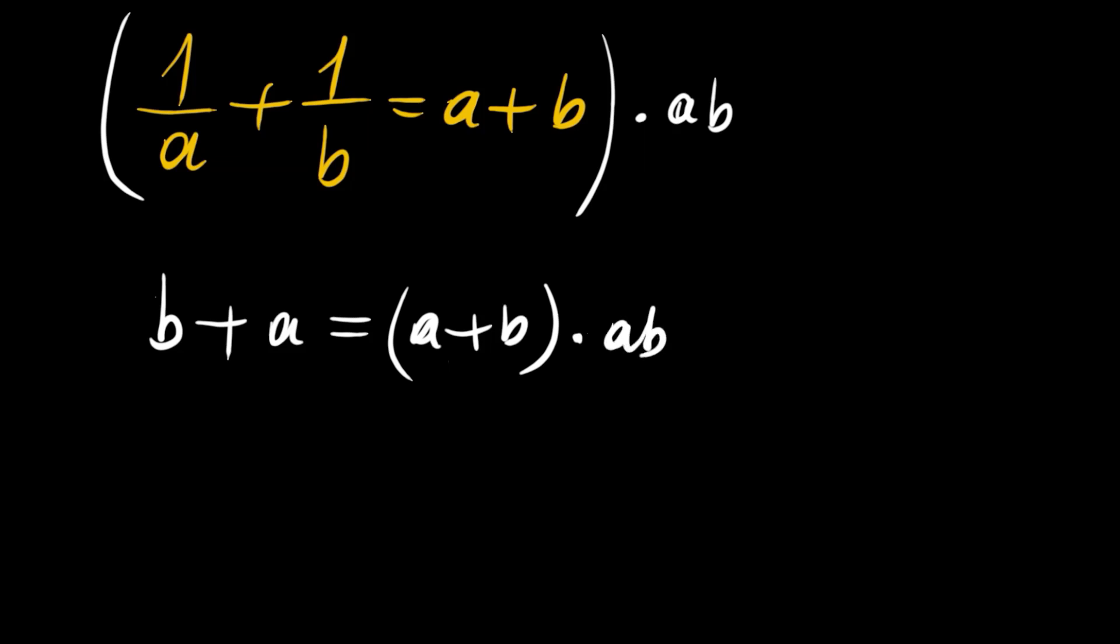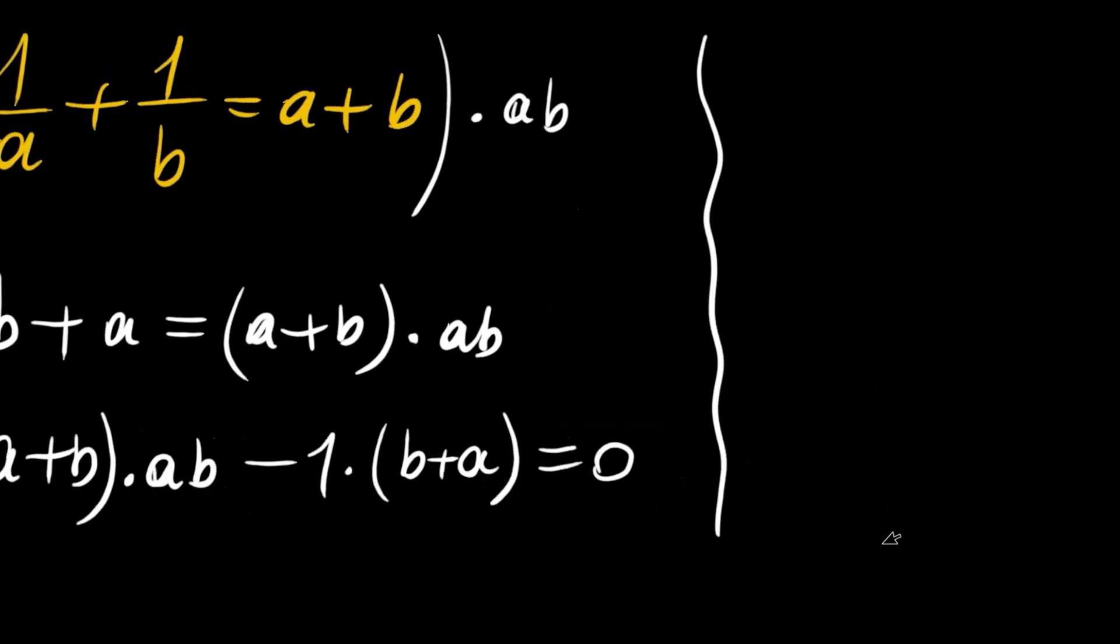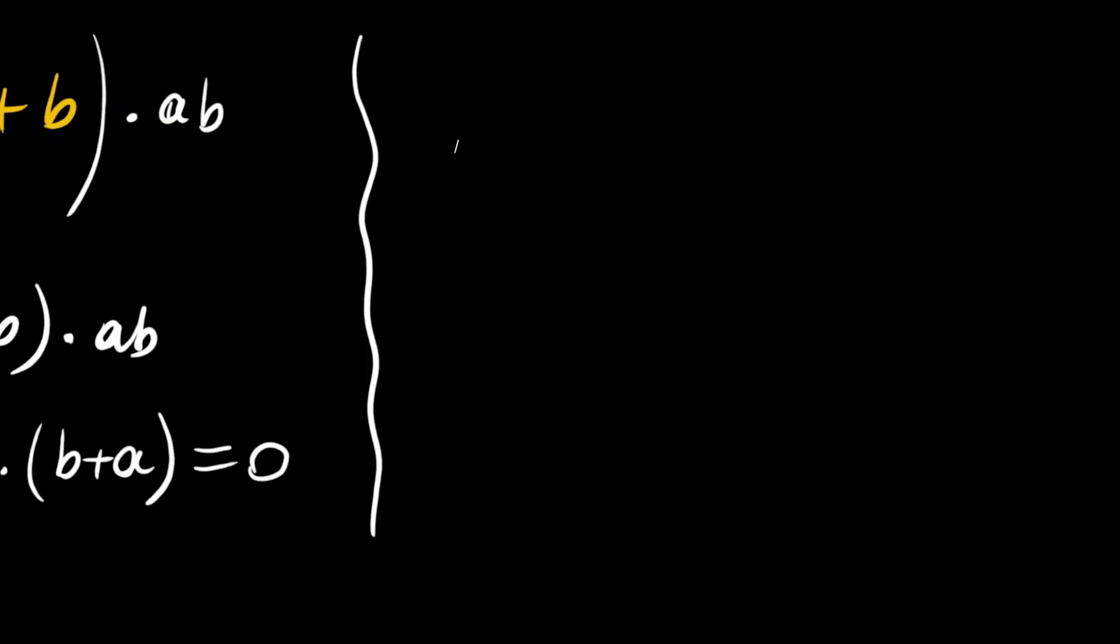Having everything on the same side we can write a plus b times ab minus this one times b plus a, and this is equal to zero now. Grouping, factoring a plus b out, we will have a plus b times ab minus one. This is equal to zero.